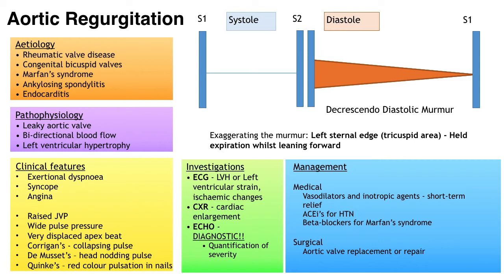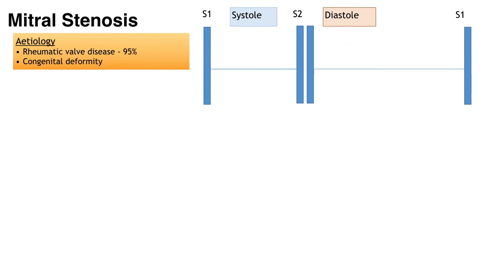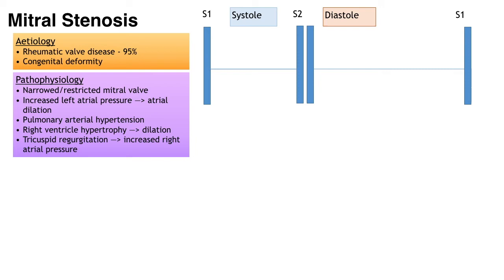Moving on to mitral stenosis — 95% of cases come from rheumatic valve disease, with the remainder being congenital deformity. In terms of pathophysiology, the mitral valve opening is restricted due to thickening and fusion of the leaflets. This impedes forward flow of blood from the left atrium into the left ventricle; to compensate, left atrial pressure rises, which also impedes blood flow from the lungs, causing congestion.